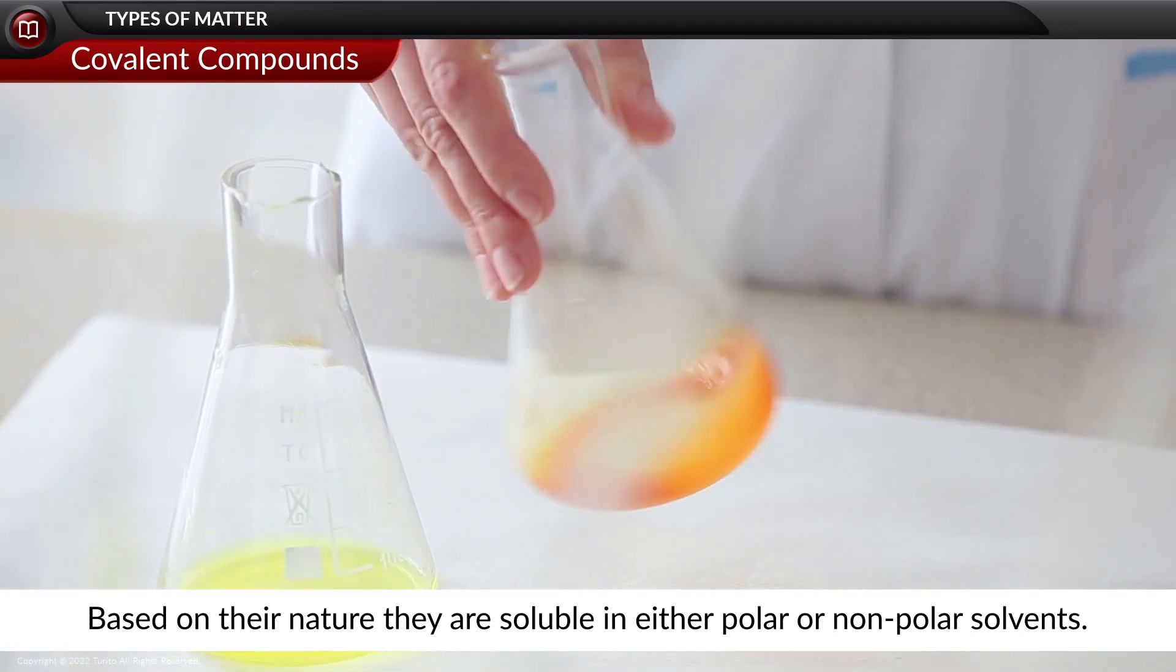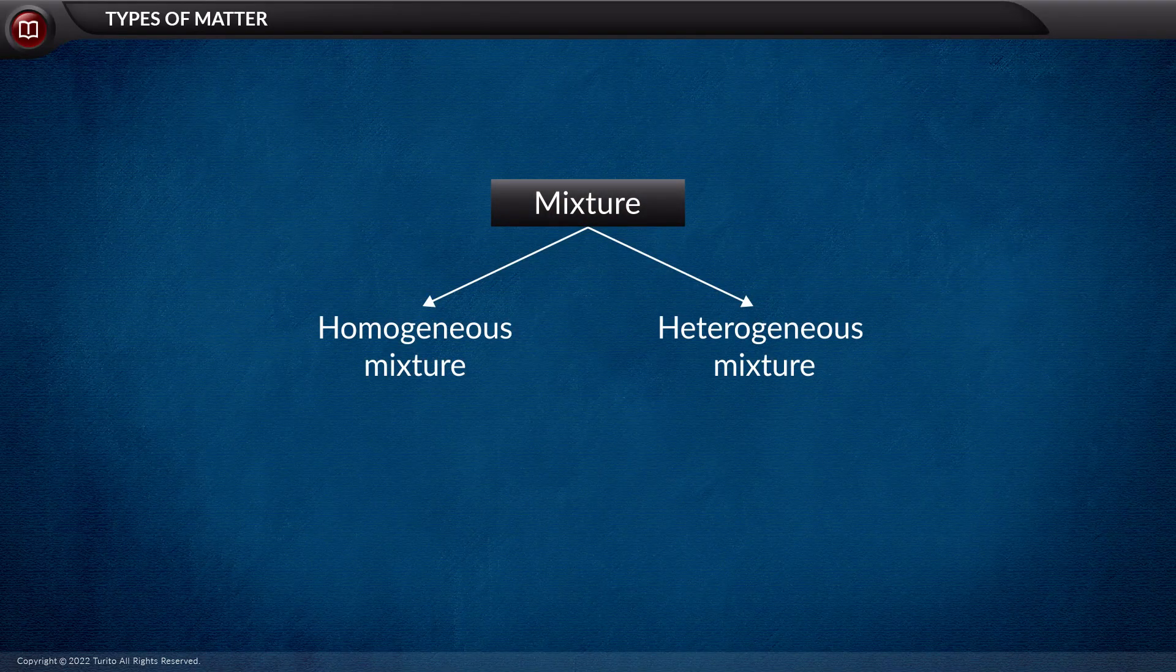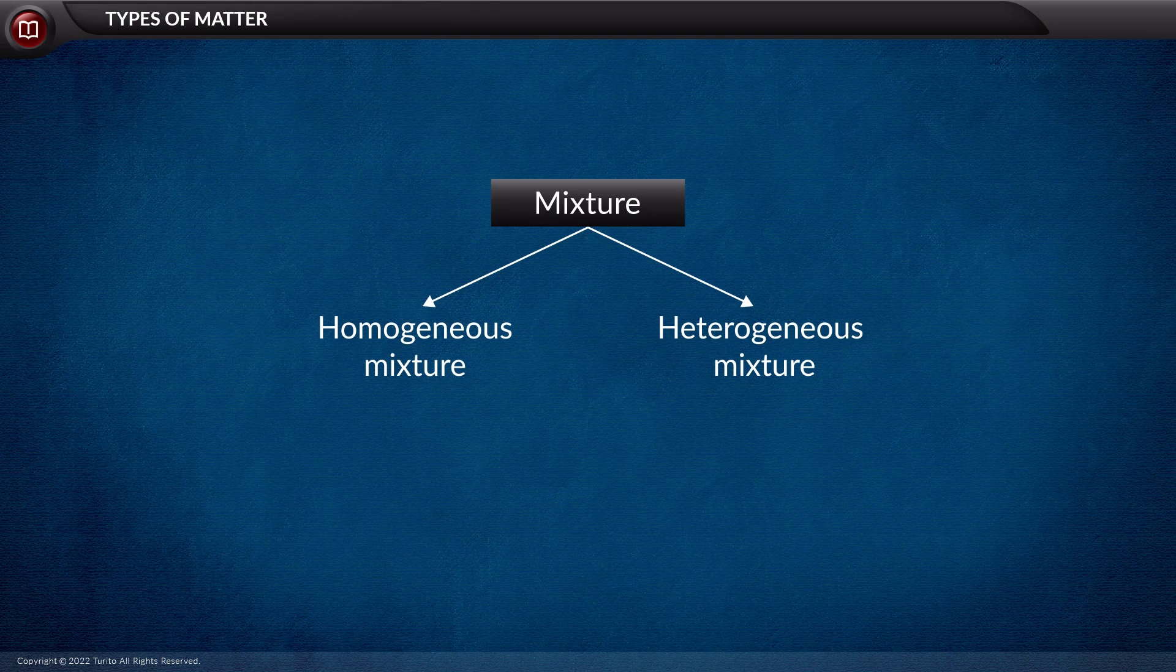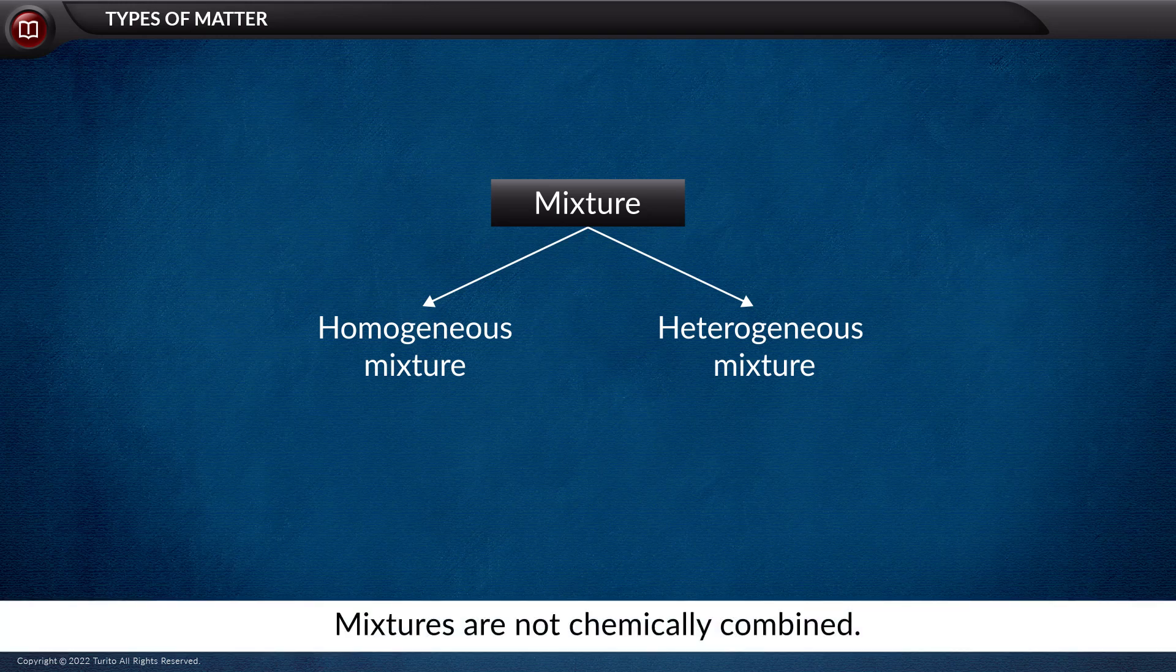Next thing to discuss is the mixture. It is the second type of matter that we must understand. In contrast to pure substances, mixtures contain more than one type of component that is not chemically combined.